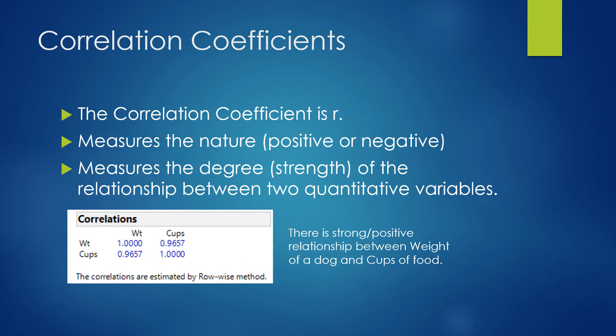Our correlation coefficients describe whether there is a relationship at all and the nature of the relationship. The nature is simply positive or negative based on the sign of the correlation coefficient. The degree or magnitude of the relationship is based on its size. The closer it is to the absolute value of 1, the stronger. Therefore, there's a strong positive relationship between weight of the dogs and the cups of food to feed them.